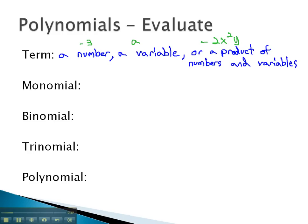Based on the number of terms in an expression, we can name the polynomials. A monomial, the prefix mono means one, one term. For example, 3a squared b cubed is a monomial.